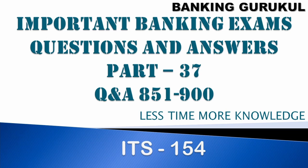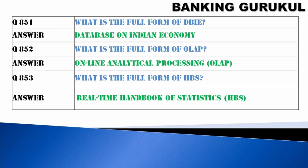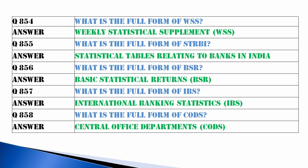Hi friends, today we'll discuss a few keywords used in banking and finance. What is the full form of DBIE? Database on Indian Economy. What is the full form of OLAP? Online Analytical Processing. What is HBS? Real-Time Handbook of Statistics. What is WSS? Weekly Statistical Supplement. What is STRBI? Statistical Tables Relating to Bank of India. What is BSR? Basic Statistical Returns. What is IBS? International Banking Statistics. What is CODES? Central Office Departments.